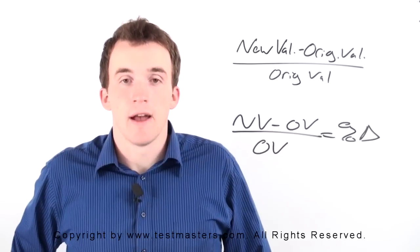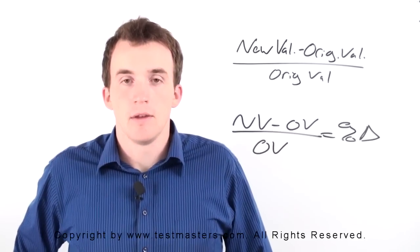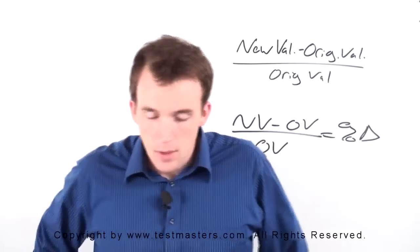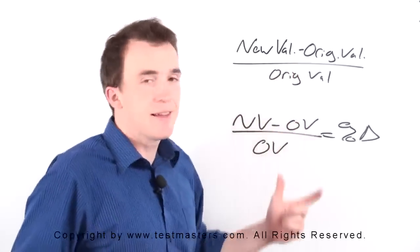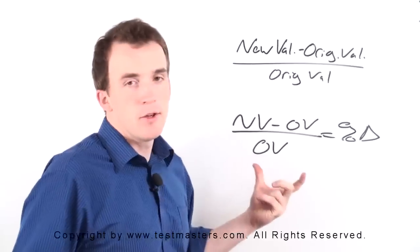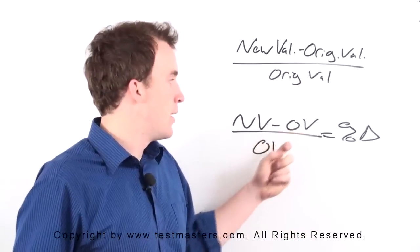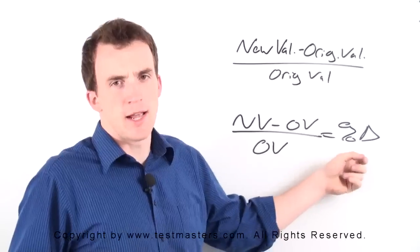New value minus original value over original value is equal to your percent change. So I wrote it up here, but I like to write it like this: new value minus old value, NV minus OV over OV, is equal to percent change.